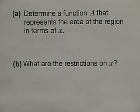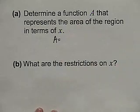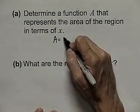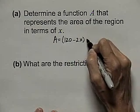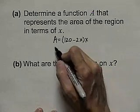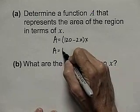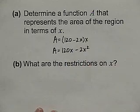Well, let's work through this application. Here's what we want to do. Determine a function A that represents the area of the region in terms of x. Now the region's a rectangle, and you know that the area of a rectangle is the length times the width. Our rectangle has length 120 minus 2x and width x. Distributing x, the area can be written 120x minus 2x squared.